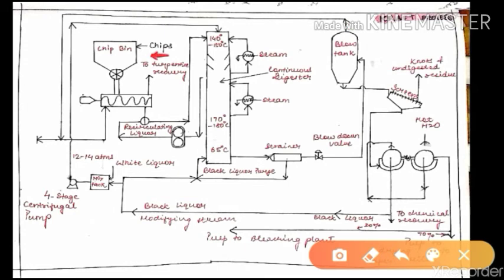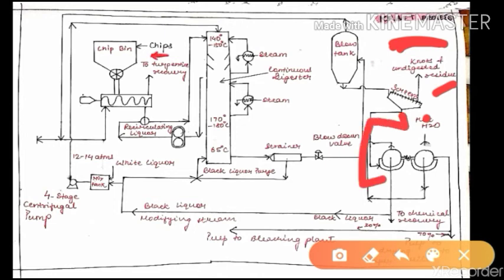The almost-ready pulp is then screened. Screening is required to reduce the content of knots and undigested residue — we do not want anything unnecessary in our semi-ready pulp. They are screened to remove knots and undigested residue, and from the screens they are taken to a pair of filters.